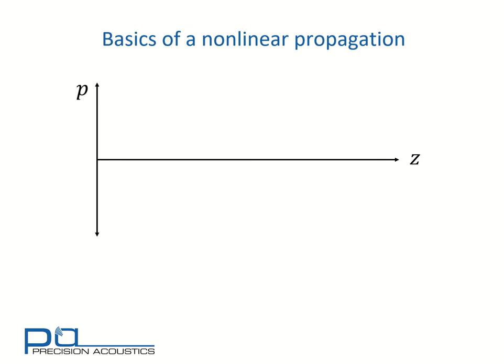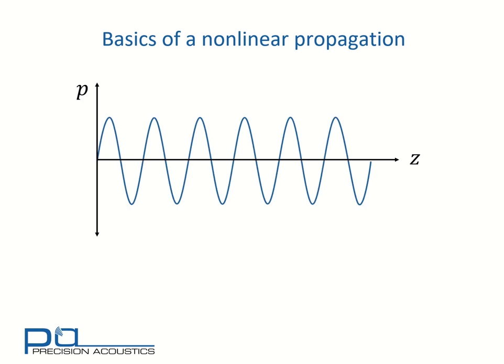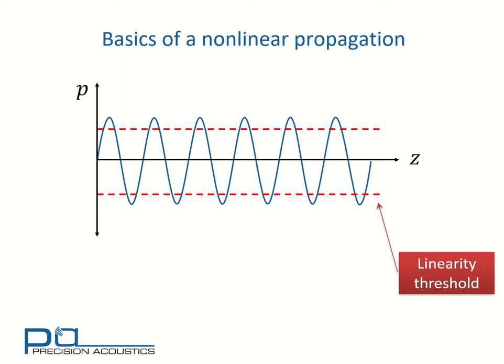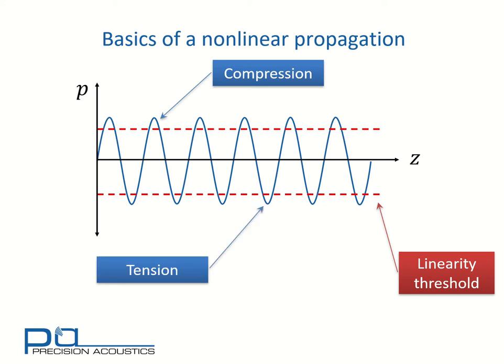So now let's consider the basics of nonlinear propagation. We'll consider a pressure wave as a function of distance. This wave will take the form of a sinusoid, and we'll assume that there's an arbitrarily defined linearity threshold. In practice, this isn't a simple cut-off point as drawn here, but for the purposes of illustration, we'll assume that once we cross this threshold, we'll start to see nonlinear behavior. It's also important to realize that positive pressure excursions are compressional in nature, and negative pressure excursions are tensional in nature.